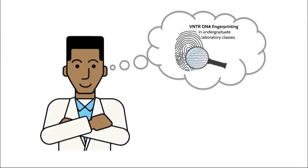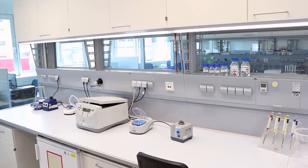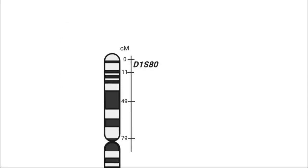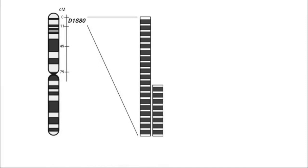This protocol is designed to provide undergraduate students the basic principles of DNA fingerprinting in laboratory classes. It is based on the human D1S80 locus, a variable number of tandem repeats region, which alleles can differ in length between individuals.